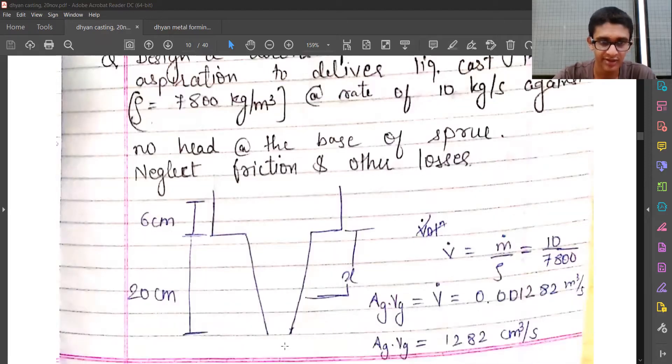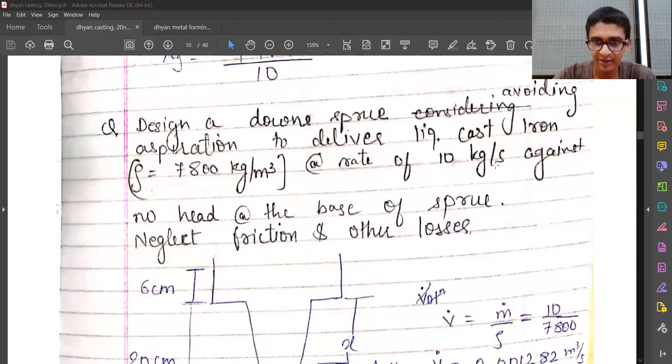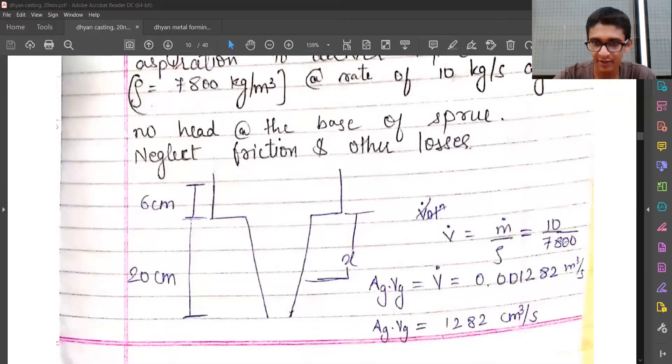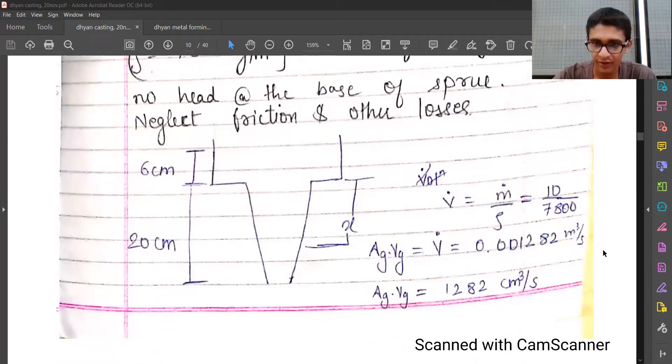Neglect friction and all other losses. So the velocity flow will be mass flow divided by density. Mass flow required is given as 10 kg per second, density is given as 7800 kg per meter cube. Hence the velocity flow will be this value in meter cube per second.